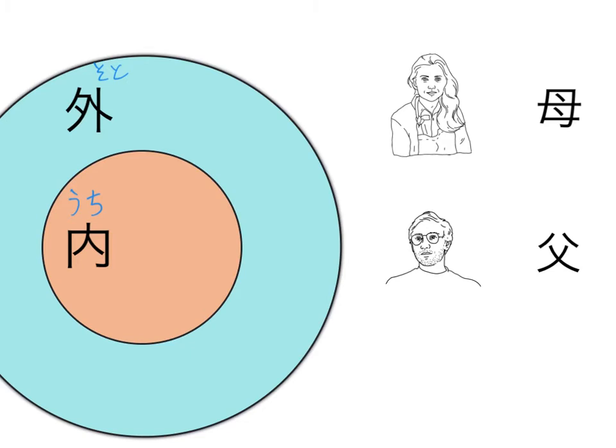Similarly, father below that is chichi. Chichi is the humble form for my father when you're talking about your father to someone outside of your uchi.